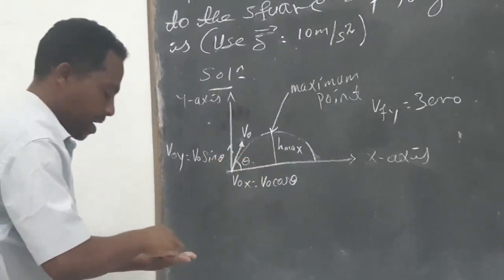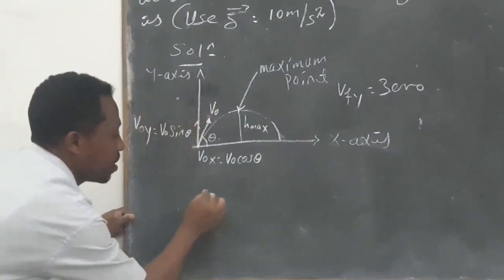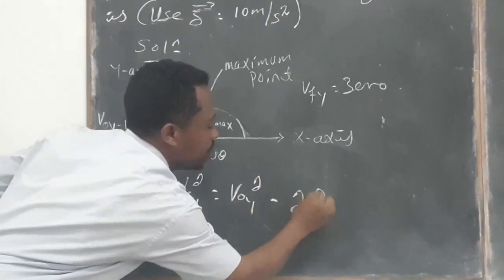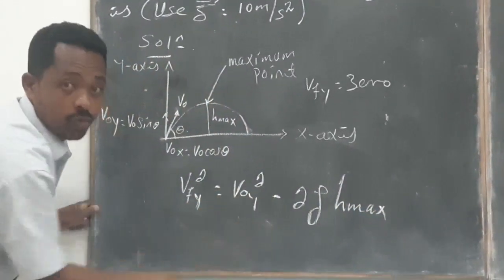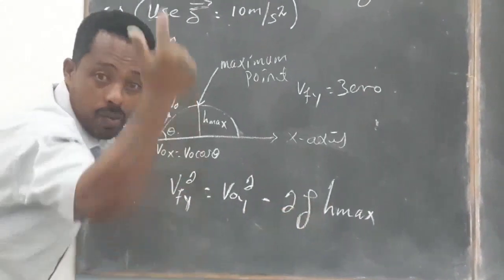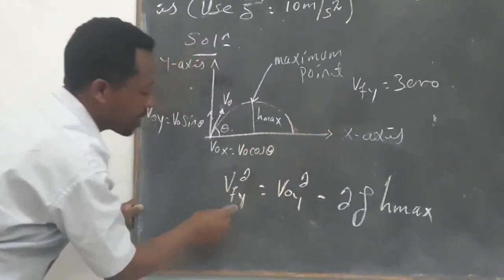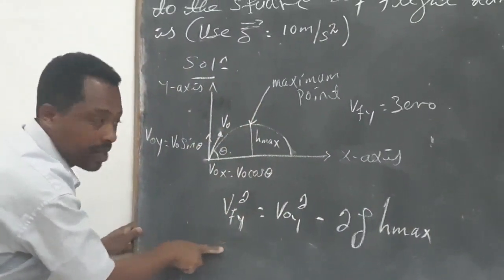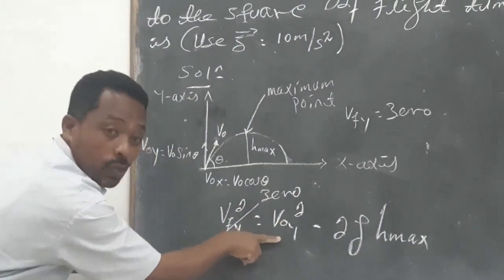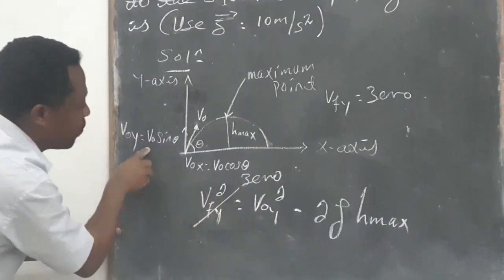So to find the maximum height, we have to use the formula as we learned in our previous lesson: V_final² = V_initial² − 2g·H_max. The minus sign is because velocity is upward and it is a vector physical quantity, but acceleration due to gravity is downward. At maximum height, V_final of y is zero.